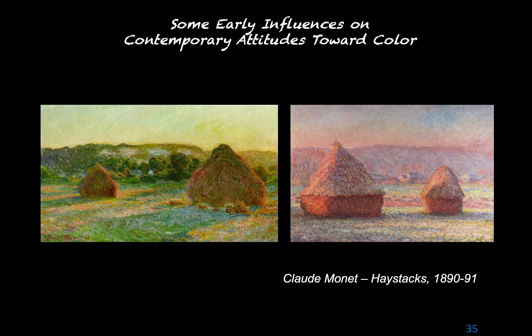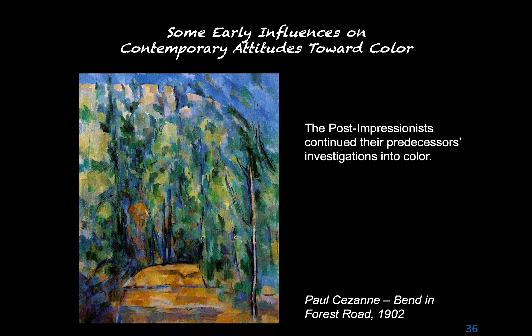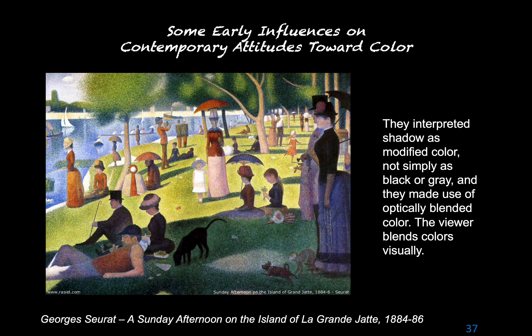The Impressionists saw that color is relative — when light changes, color changes. They created multiple images of the same subject under different lighting conditions, as seen in Claude Monet's haystacks. The Post-Impressionists continued these investigations, using complementary colors in large areas to intensify each other and in small daubs to neutralize each other. They interpreted shadow as modified color — not simply black or gray — and made use of optically blended color, where a dab of red adjacent to a dab of green would be blended by the eye to appear gray.